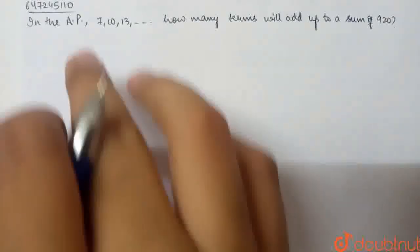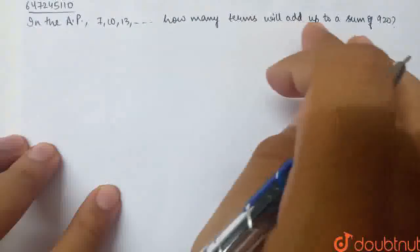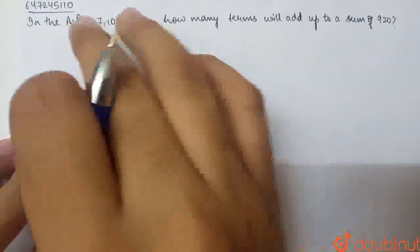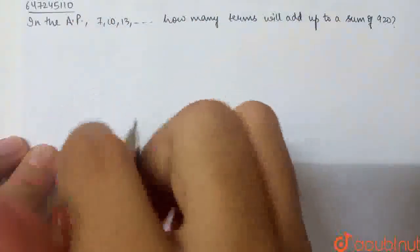This question says, in the AP given by this, how many terms will add up to a sum of 920? How many terms will make the sum of 920?